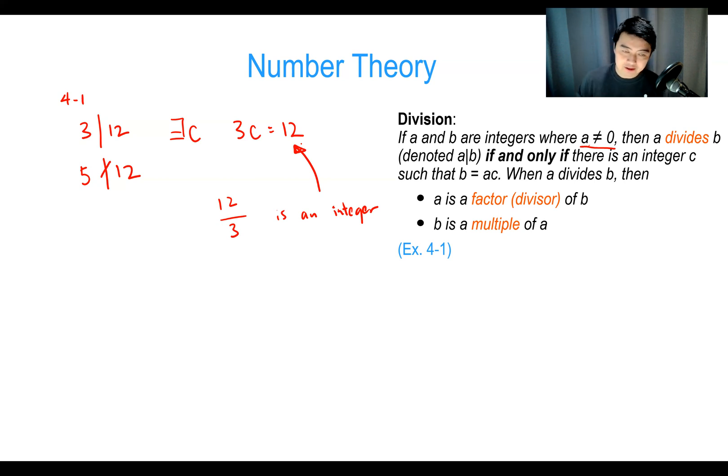This is called the division algorithm. Any two numbers, when I divide them, give a unique Q and R where R is constrained between 0 and D minus 1. We're kind of in the middle of number theory here — in the next video we'll do a bigger application from the definitions we have.